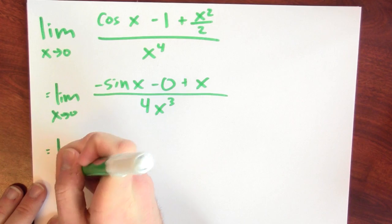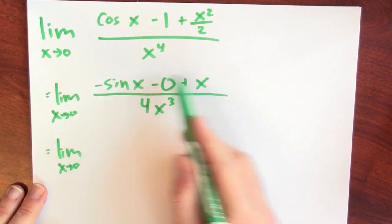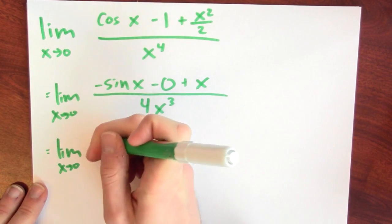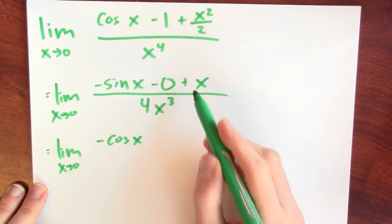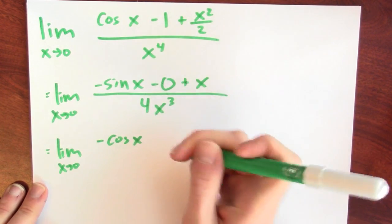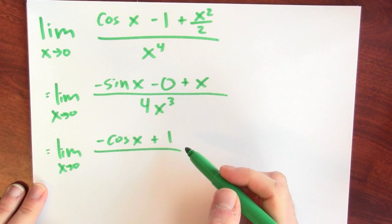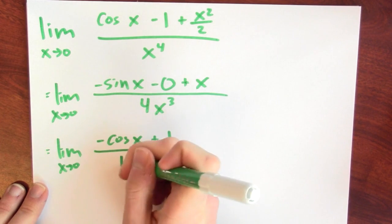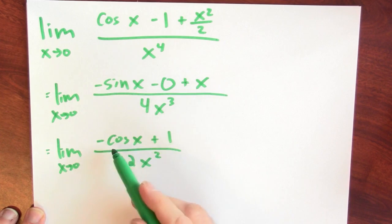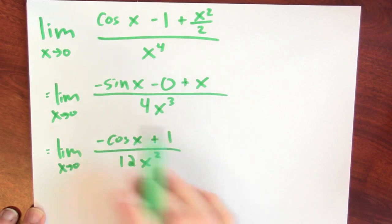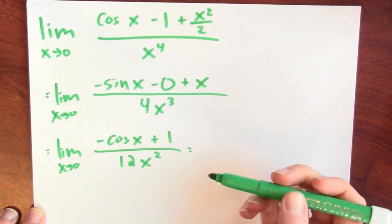Applying L'Hôpital again, I should differentiate the numerator and denominator separately once more. The derivative of the numerator: what's the derivative of minus sine x? That's minus cosine x. And the derivative of plus x is plus 1. I'm going to divide by the derivative of 4x cubed, which is 12x squared. Again, the limit of the numerator and the limit of the denominator are both 0, so I can apply L'Hôpital yet again.